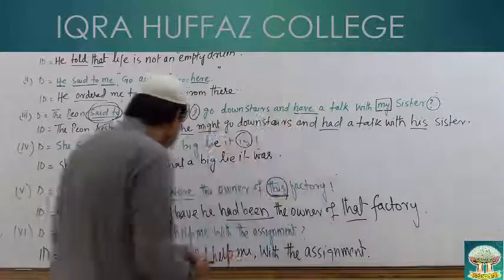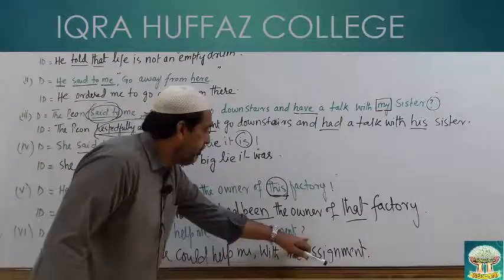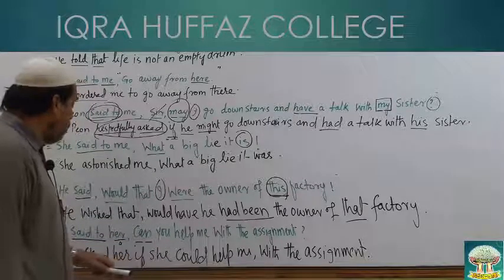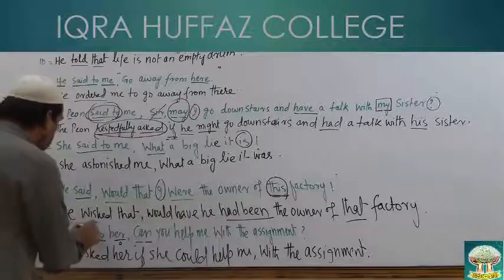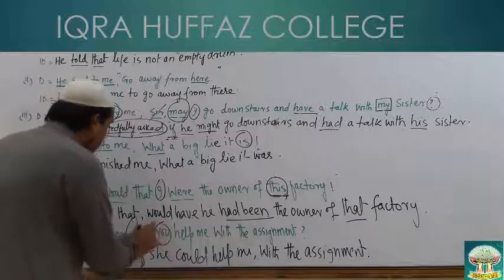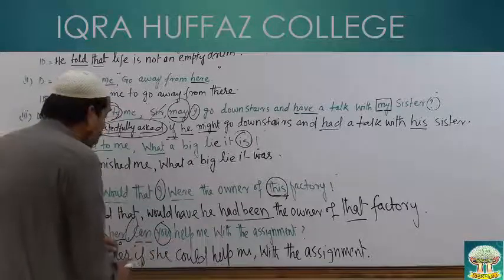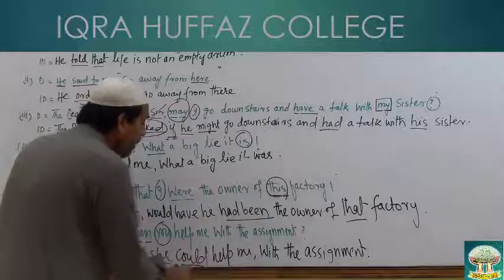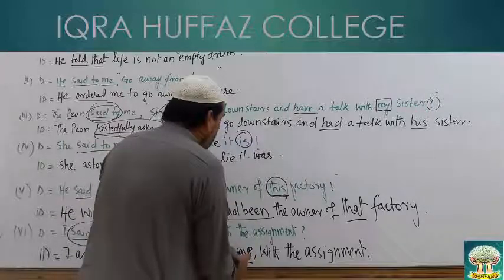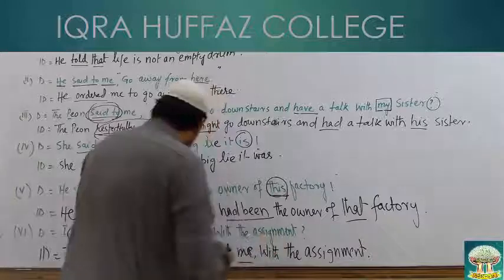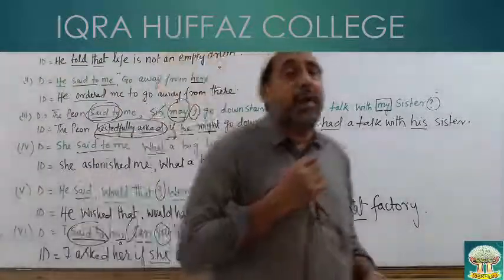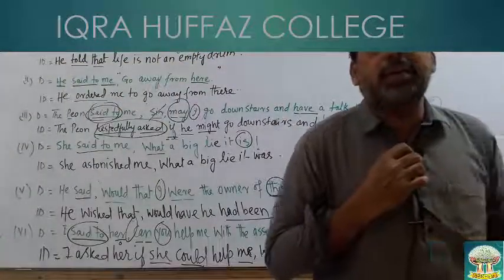क्या तब्दीलियाँ हुईं — गौर से देखिए: सवालिया जुम्ला था और शुरू हो रहा था 'can' से यानि auxiliary verb से, तो comma inverted comma की जगह 'if' लगाया। सवाल पूछ रहे हैं तो 'said to' की जगह 'asked'। 'You' object के लिहाज से 'she' में तब्दील हो गया, 'can' → 'could', 'me' as it is رہا — subject 'I' है تو 'me' me ही रहा। Final: 'I asked her if she could help me with the assignment.' Thank you, jazakallah.